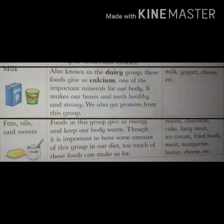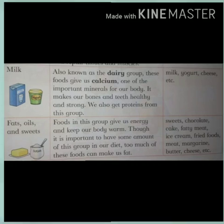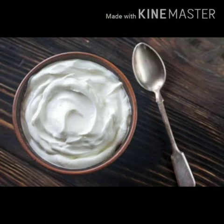Fourth is Milk, also known as the dairy group. These foods give us calcium, one of the important minerals for our body. It makes our bones and teeth healthy and strong. We also get proteins from this group. Isse dairy group bhi kaha jata hai — dairy means voh group jis mein milk aur milk se bani hoi chizain hain. Yeh foods hume calcium provide kerte hai. Yeh humari bones aur teeth ko healthy aur strong banate hai. Is dairy group se hum proteins bhi hasil kerti hai. Examples: milk, yogurt, cheese, etc.